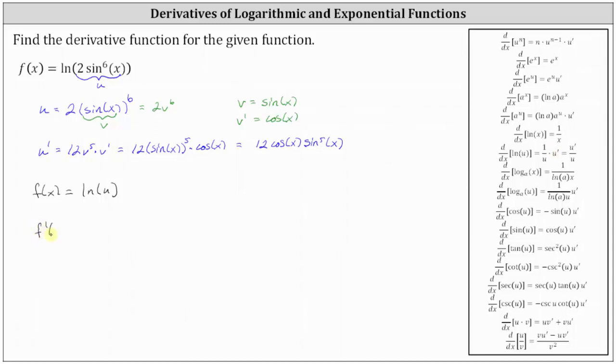And therefore, f prime of x is equal to 1 divided by u, which is 1 divided by, let's write u as 2 sine to the sixth x, and then times u prime, which we know is 12 times cosine x times sine to the fifth x.